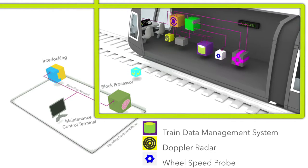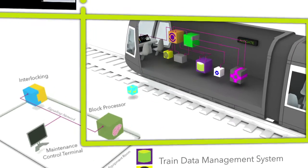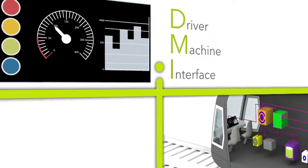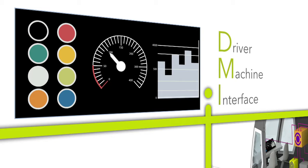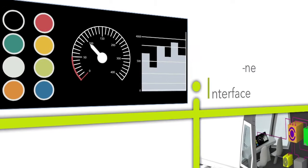In addition there is the driver machine interface, the radio system for communications with the trackside equipment and internal communication systems that link all the onboard equipment together.